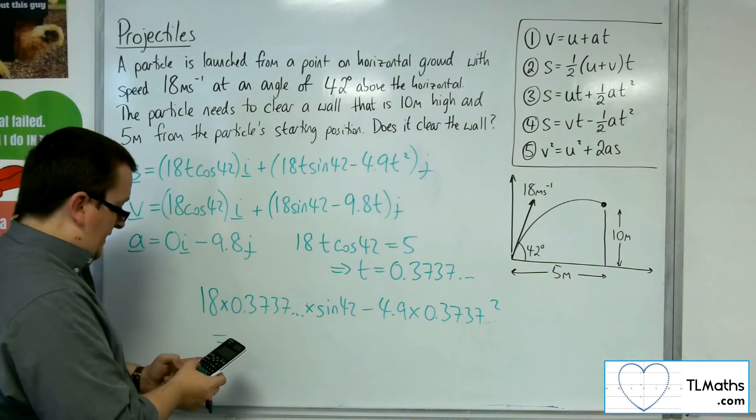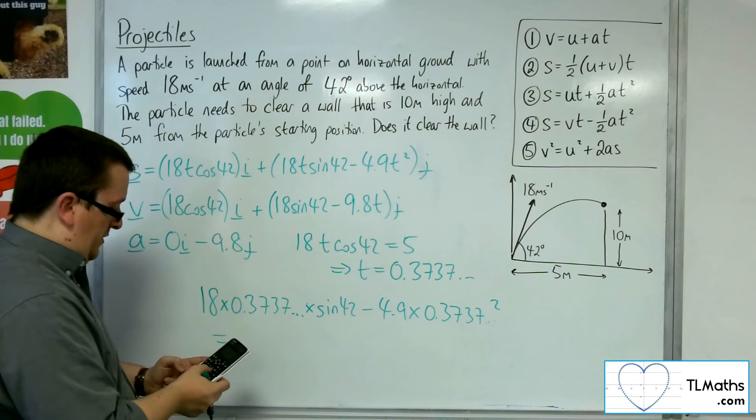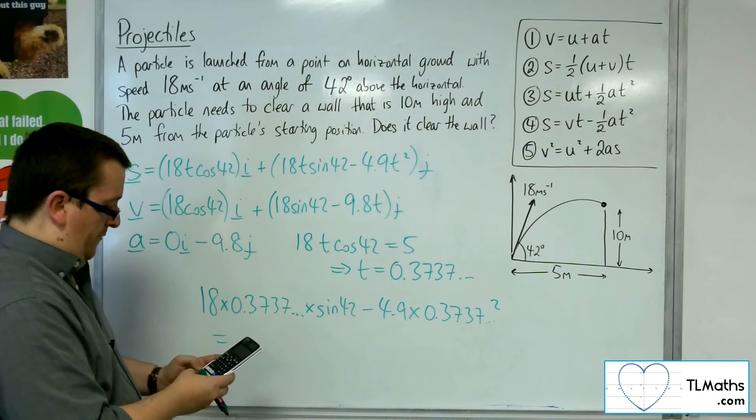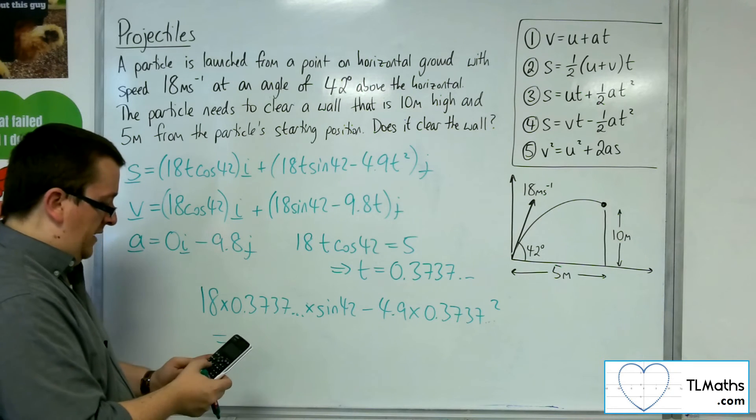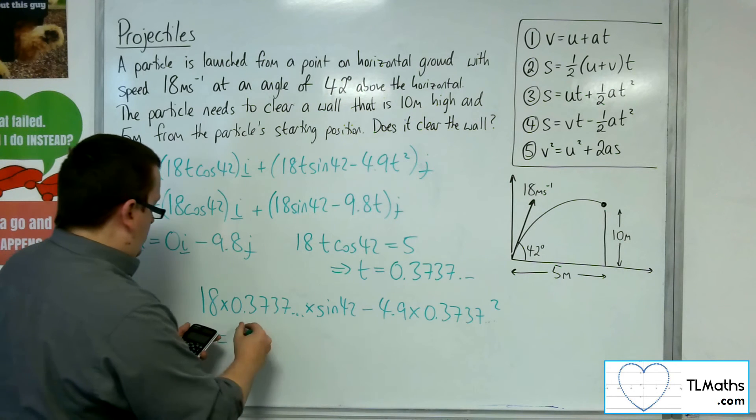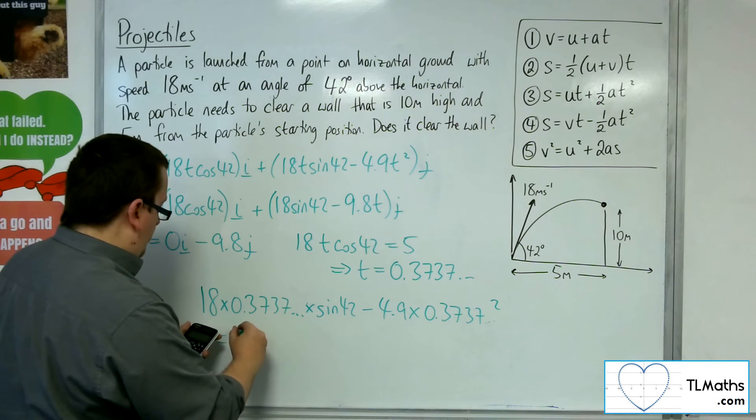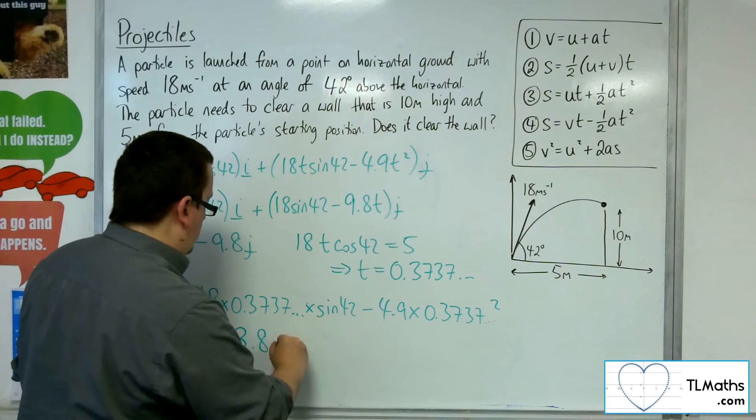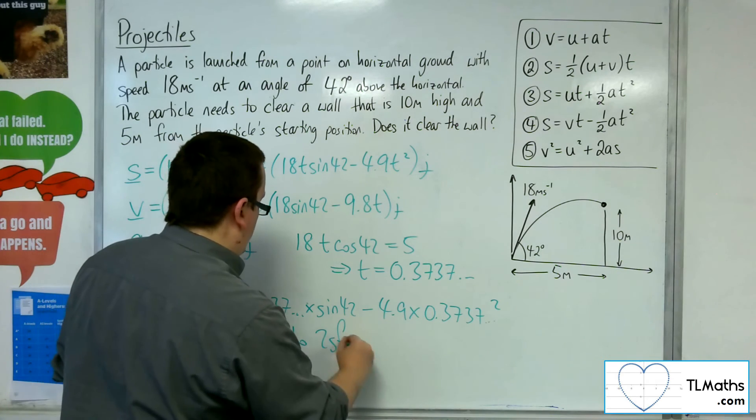So we get 18 times the answer key, times sine of 42, take away 4.9 times the answer key squared. And that's 3.8174, so 3.8 metres to two significant figures, which is clearly a lot shorter than the 10 metres it needed to be to clear the wall.